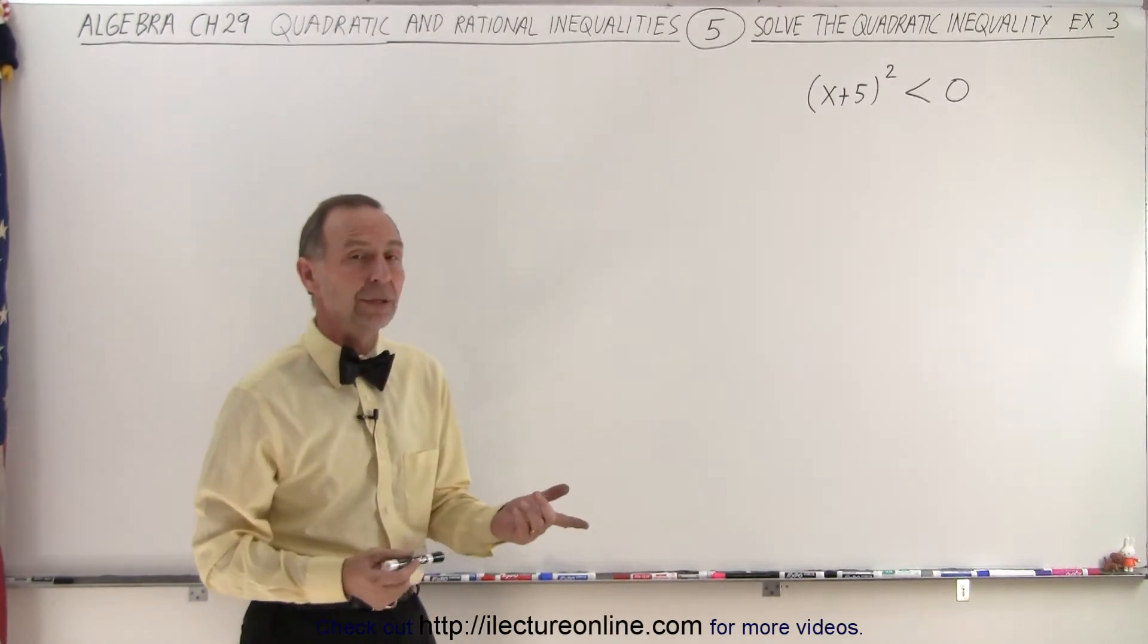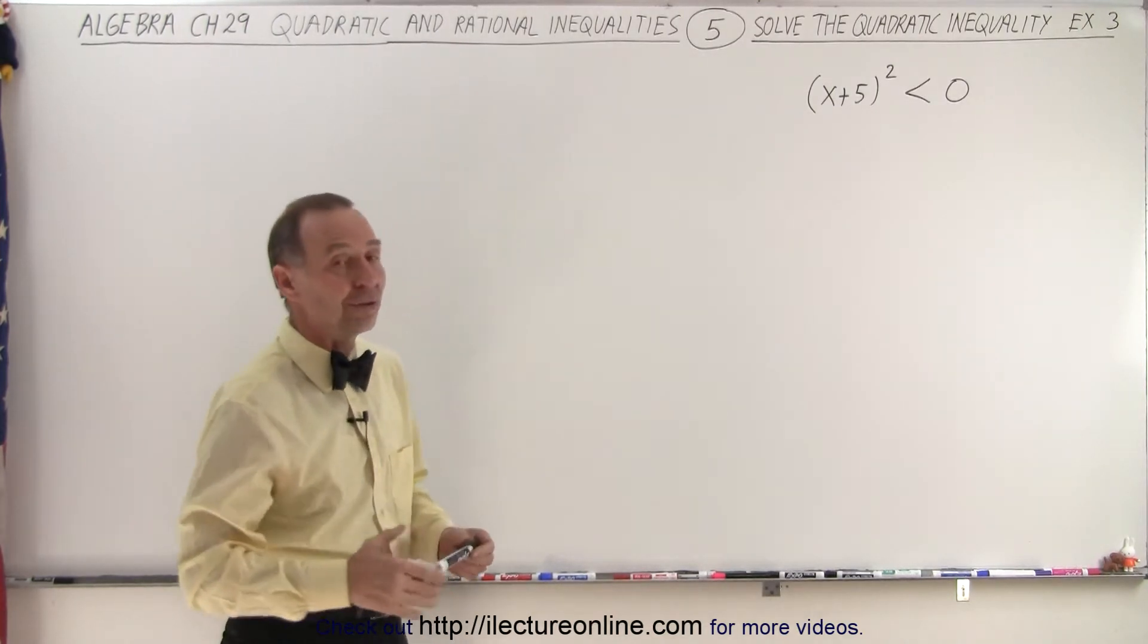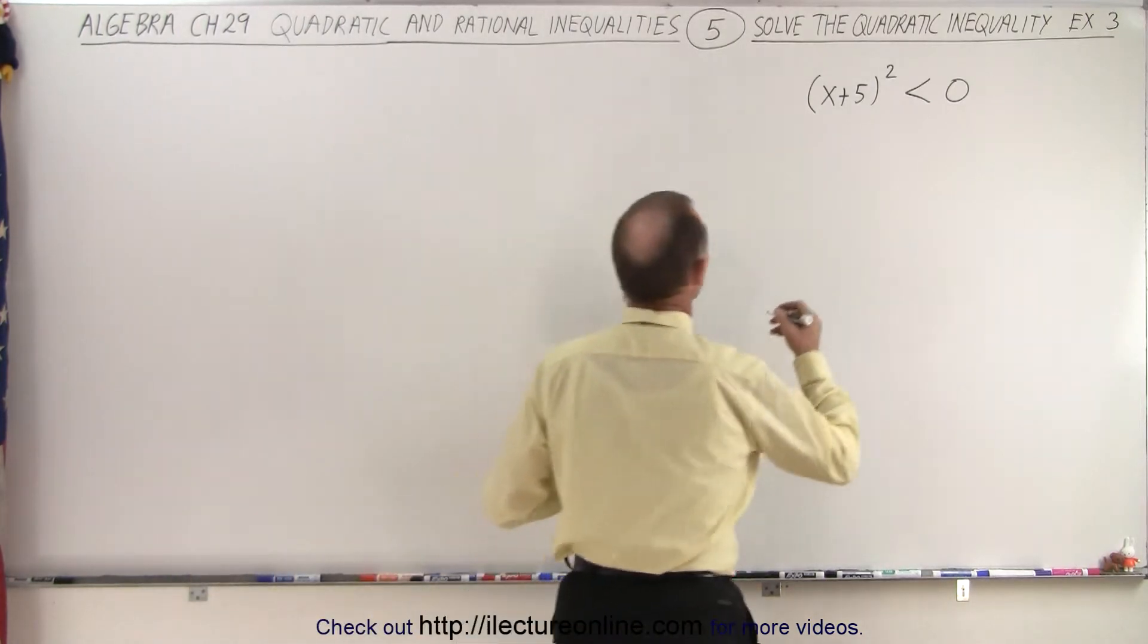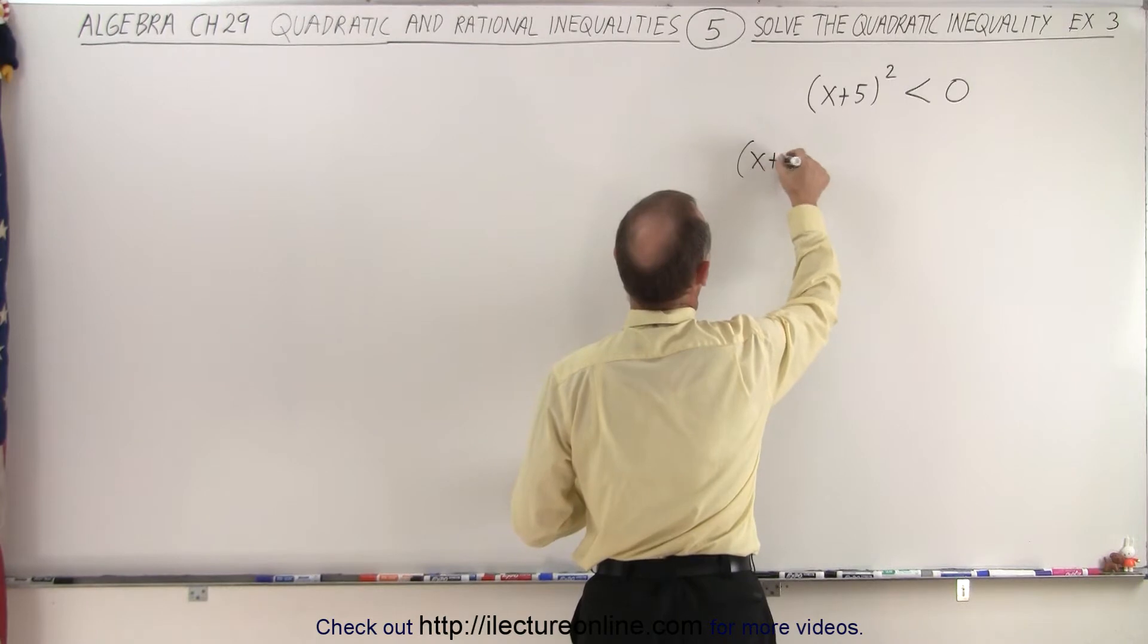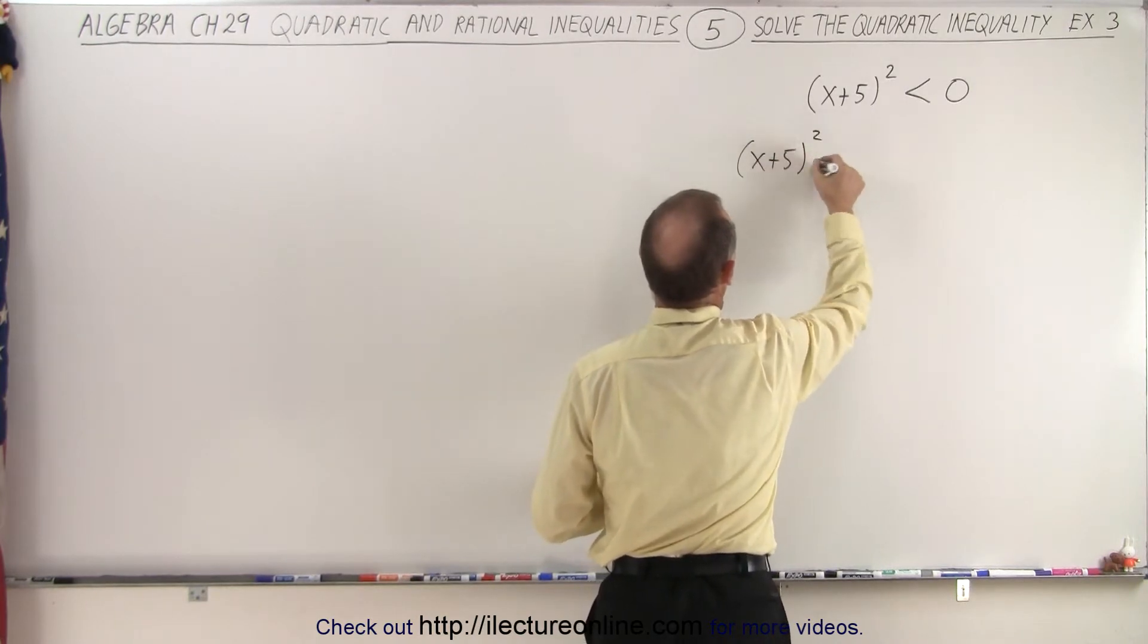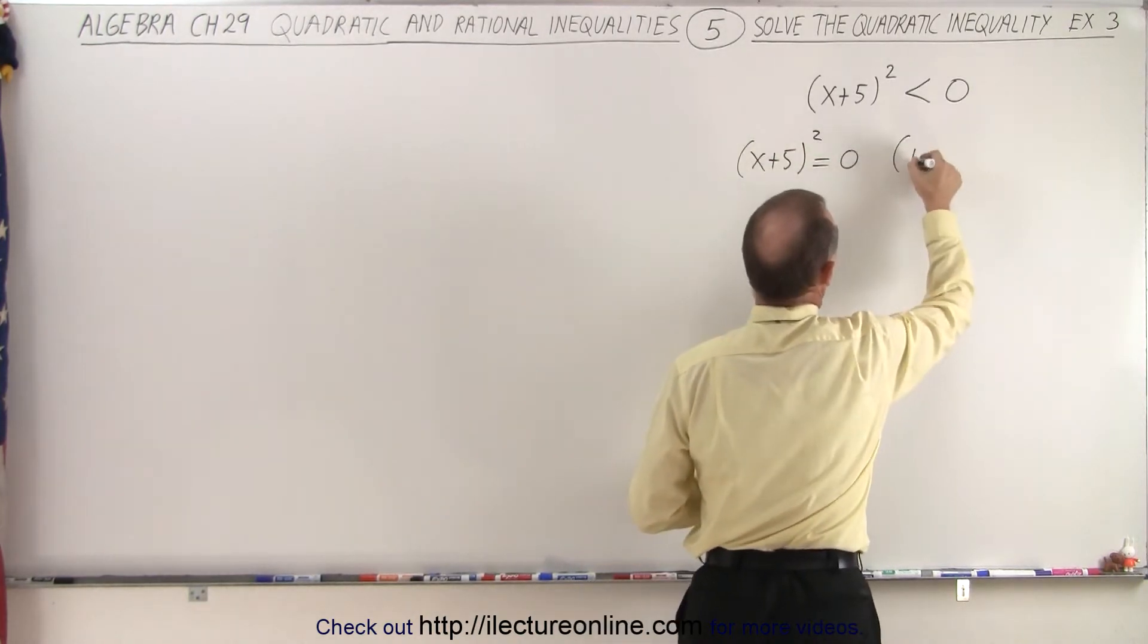So the next step is to change the inequality symbol to an equal sign to find the critical points. So we're going to take x plus 5 squared and set it equal to 0 to find the critical points.